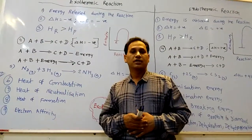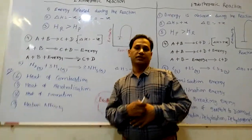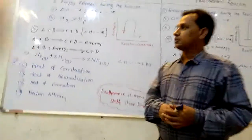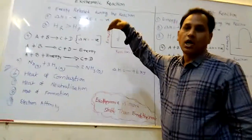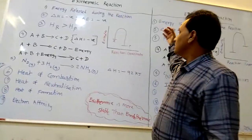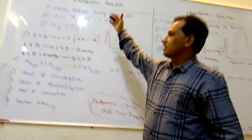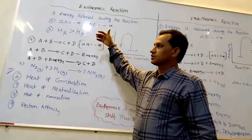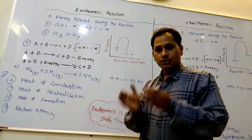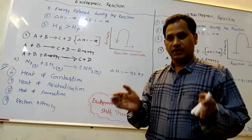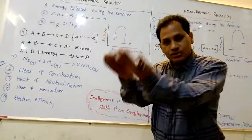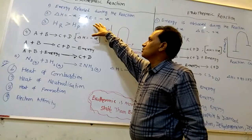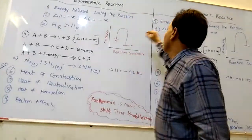Difference between exothermic reaction and endothermic reaction. Exo means out, endo means in. Exothermic reaction means during the chemical reaction, some energy is released to outside from the system. It is known as exothermic reaction.